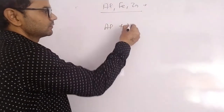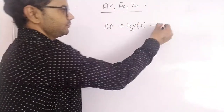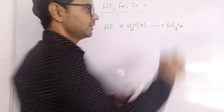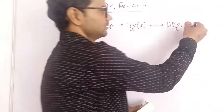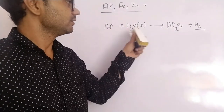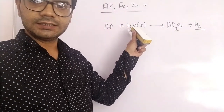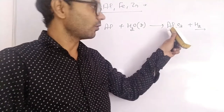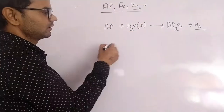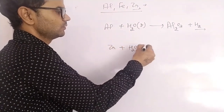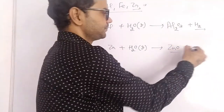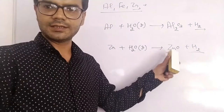For example: aluminium plus steam gives aluminium oxide plus hydrogen gas. Because of its lower reactivity and the water being at 100 degrees Celsius, oxide is formed instead of hydroxide. Similarly, zinc plus H₂O gives zinc oxide plus hydrogen gas.